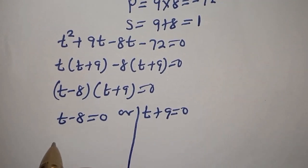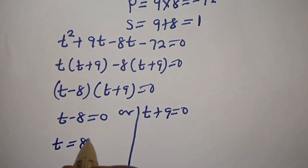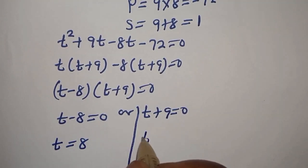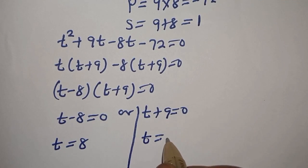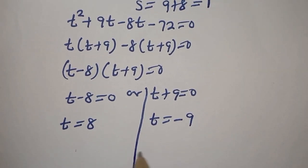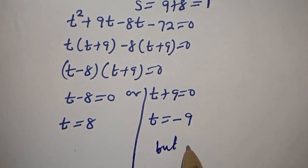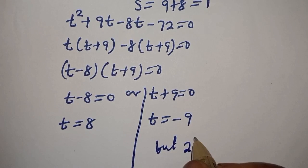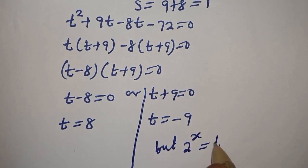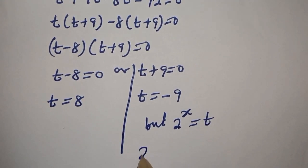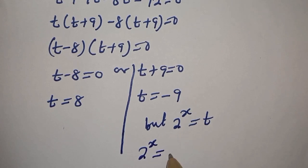From the first case, T is equal to 8. From the second case, T is equal to minus 9. But since 2 raised to power S is equal to T, then 2 raised to power S equals minus 9, which has no solution since an exponential cannot be negative.